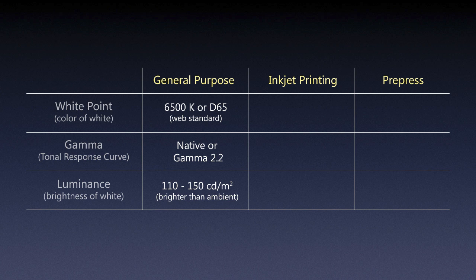For general purpose luminance, I would go anywhere from 110 to 150 candelas per meter squared. This is a working situation so the screen should be brighter than ambient lighting. Many monitors are designed as multimedia devices and sometimes cannot go lower than 130–140 cd/m², so 150 is a practical target. On the lower end, 110 cd/m² is good if you're potentially sending work to a local lab to be printed, though some monitors can't go below about 120 cd/m².